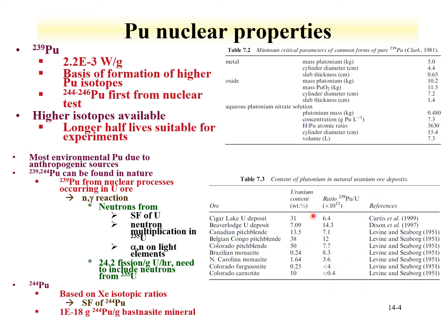This definitely indicates that plutonium-239 can be found in nature, but at extremely low concentrations. There have also been papers written about plutonium-244 in nature, based upon spontaneous fission of plutonium-244 and the xenon isotopes that result. The reason this is even a possibility is the relatively long half-life of plutonium-244. These isotopic ratios have been examined in bastnäsite minerals — the same mineral phases used in lanthanide mining.